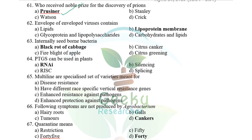Who received the Nobel Prize for discovery of prions? Stanley Prusiner received the Nobel Prize for the discovery of prions in 1997. Prions are a new group of pathogens — infectious or misfolded proteins — and no prion disease has been observed in plants so far.